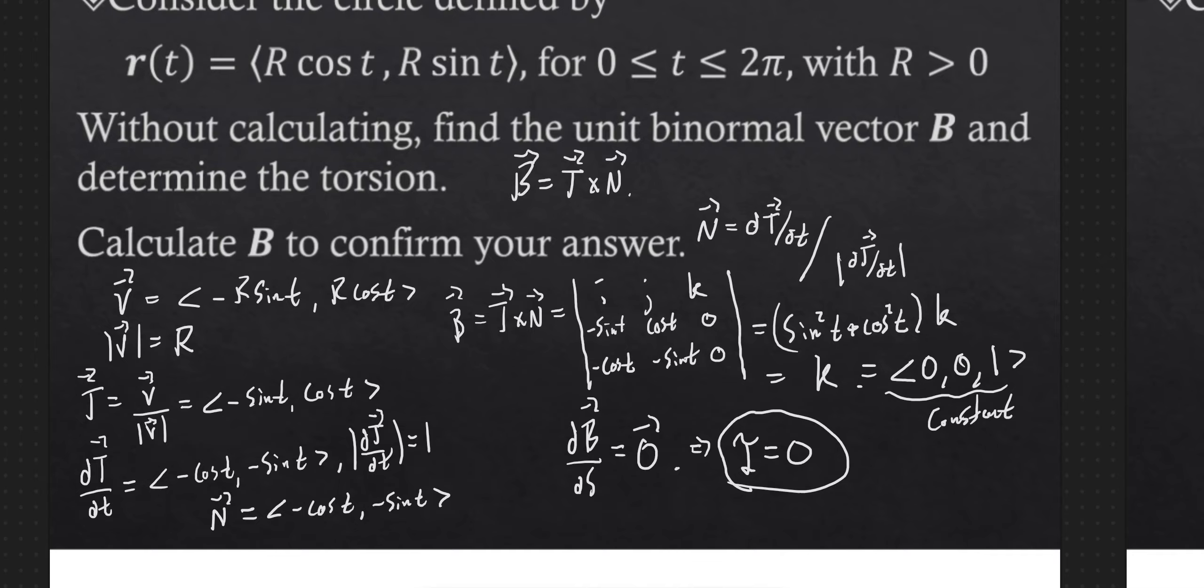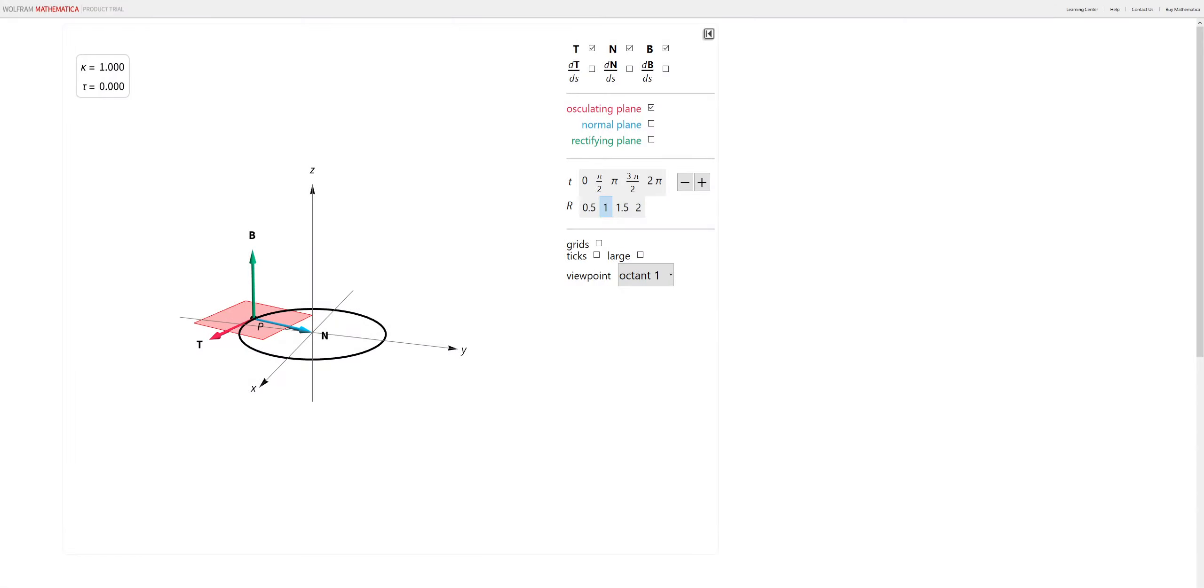So unit normal vector b is just k, and the torsion for the circular trajectory is zero. And again, so let me jump back to the figure one last time. This osculating plane is not changing. At all times, the osculating plane is the xy plane.